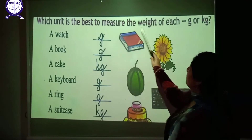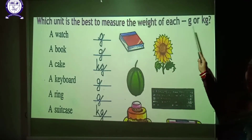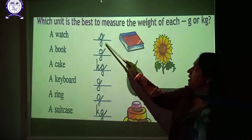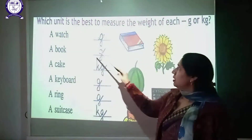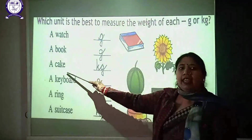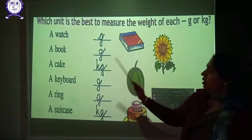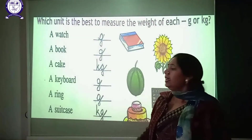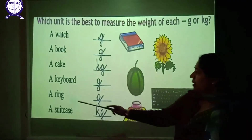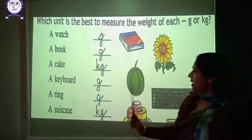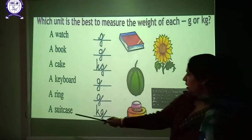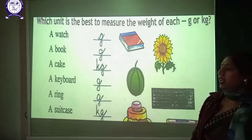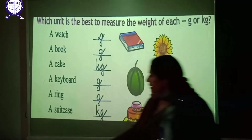Now we measure the weight of objects in kilogram or gram. A board and a book are measured in grams. A cake is measured in kilograms. A keyboard and a ring are light, so they are measured in grams. A suitcase is heavy, so it is measured in kilograms.